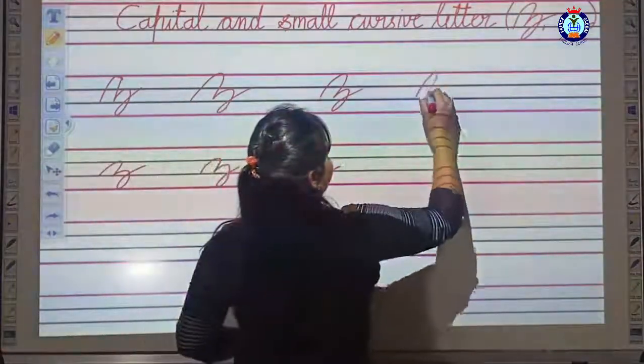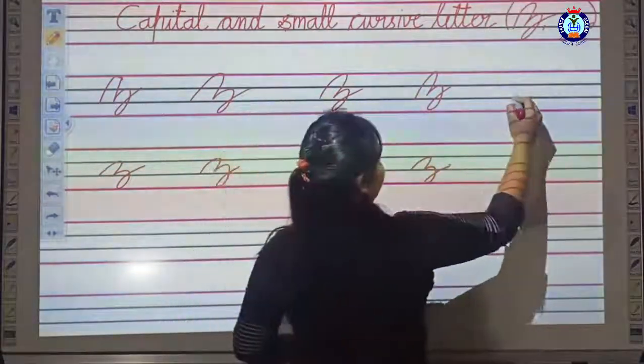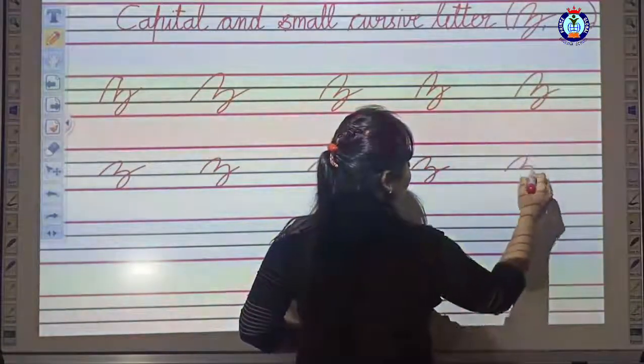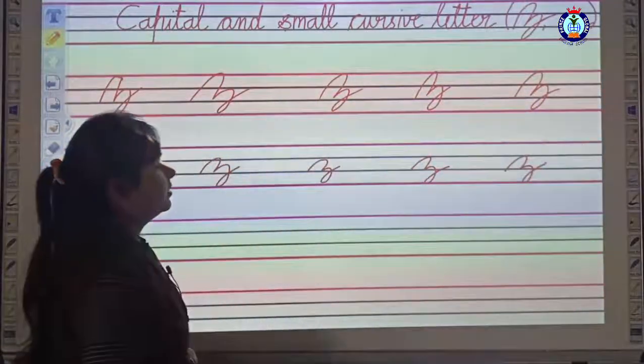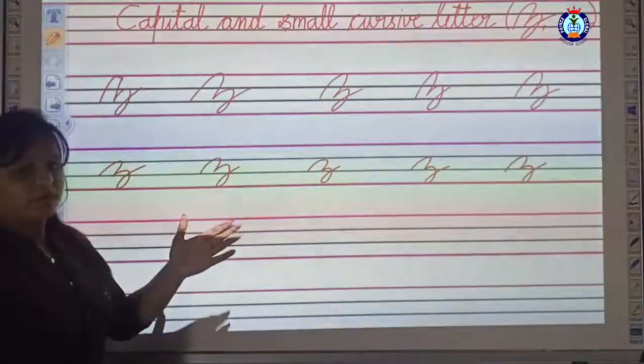This one is capital letter Z, and this is small letter Z. This is capital letter Z, and this is small letter Z. The letter Z is completed.